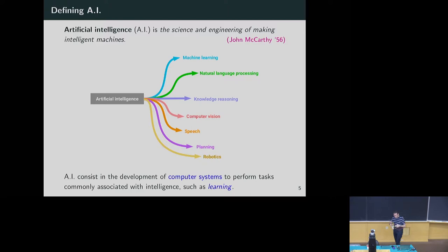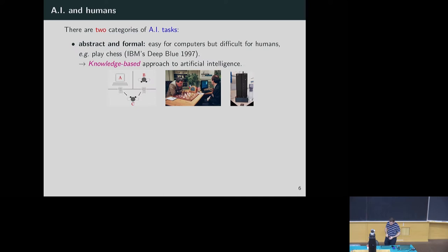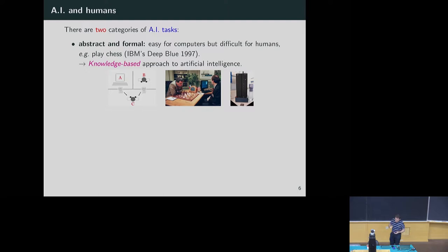From a more theoretical point of view, we can define two families of tasks when constructing a model. We have tasks that are abstract and formal — for example, playing chess. For us as human beings, it's hard because you need to understand a set of rules. But from a machine perspective, it's not so difficult: you can test different games, compute probabilities, and have a knowledge-based approach — something you can code. This was one of the first applications of machine learning.